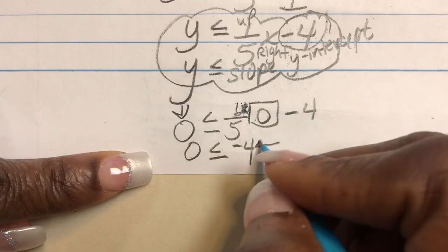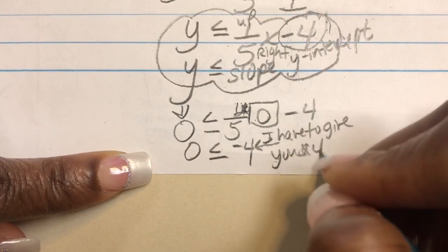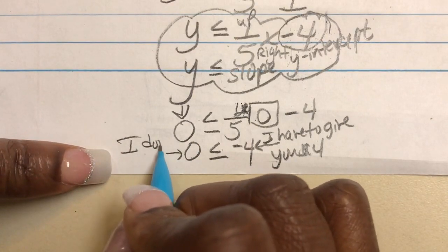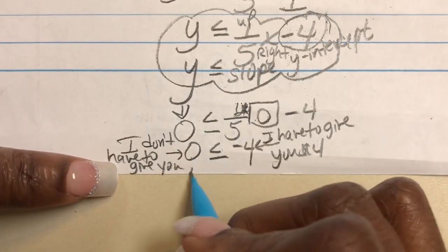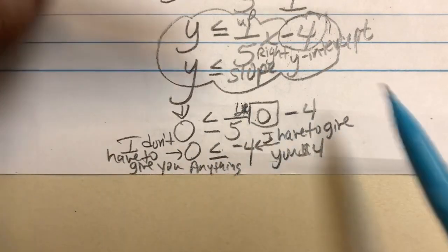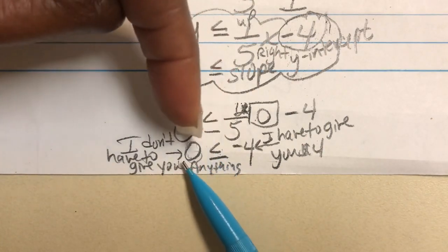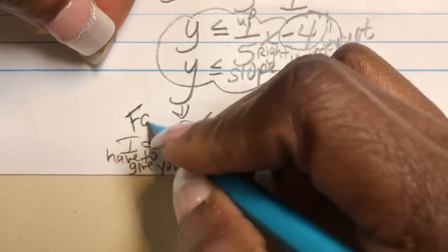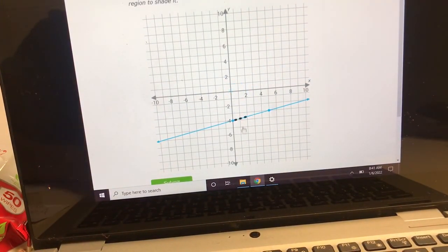The Pac-Man points to whatever is greater. This negative 4 means I have to give you $4. This 0 means that I don't have to give you anything. Would you rather have to give me $4 or would you rather have to give me nothing? You'd rather have to give me nothing. So this inequality should have been pointing towards a 0 for it to be true. So actually this inequality is false. It's not true. So that means that I'm not going to shade in the side that contains 0, 0 because it made it false. So I'll just shade in the other side.